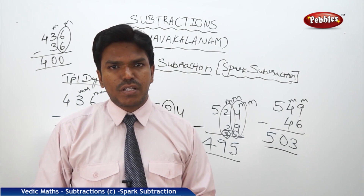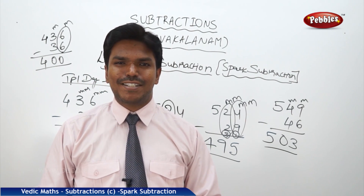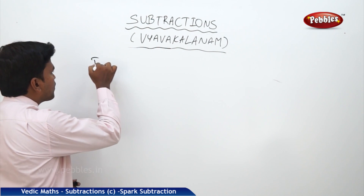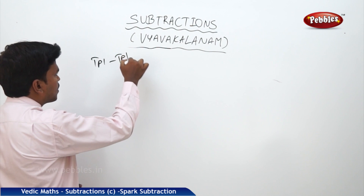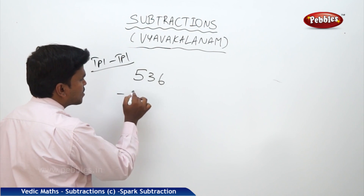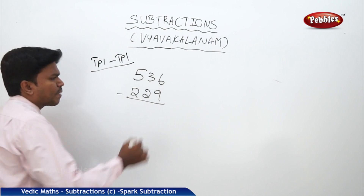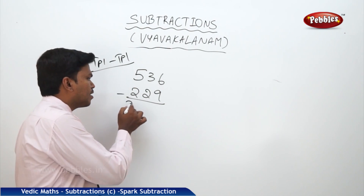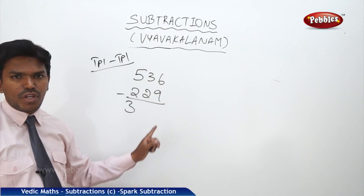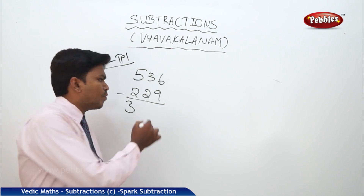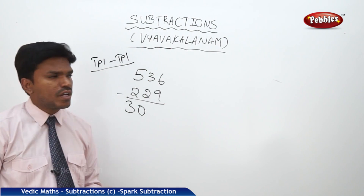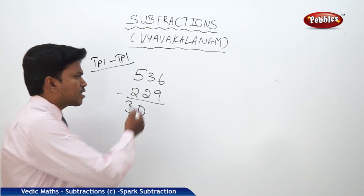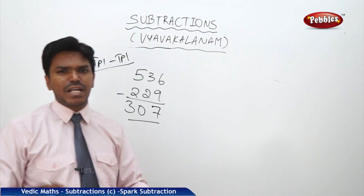Now we will go one more step — triple digit minus triple digit numbers. Suppose 536 minus 229. Start from left to right. 5 minus 2 is 3. But — next numbers match, so 3 only. Now 3 minus 2 is 1. But next number is mismatch, so 1 becomes 0. Since mismatch, bring the upper number and add to the below number's complement. 6 plus 1 is 7. My answer is 3, 0, 7.